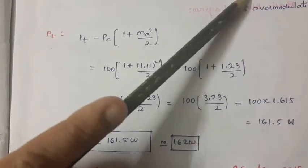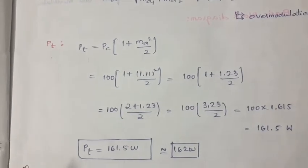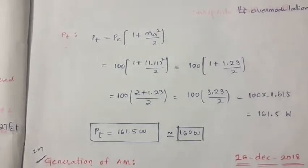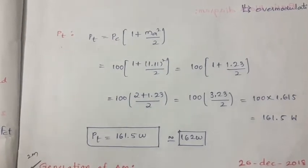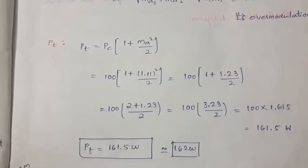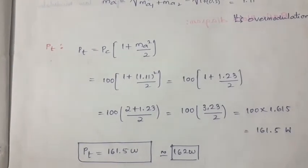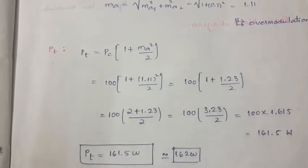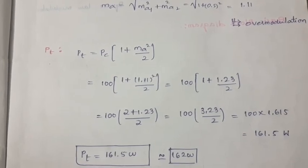The peak power delivered to the system is calculated using PC × (1 + ma_eff²/2). With ma_eff = 1.11, the peak power equals 121.5 watts. This is how we determine whether we have perfect modulation, under-modulation, or over-modulation. If over-modulation occurs, the output will have distortion and signals will be lost. We must tune the system to reduce the modulation index below one. Thank you for watching — please subscribe for further updates on communication theory and information theory tutorials.